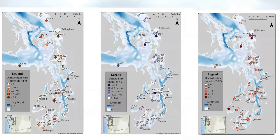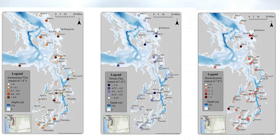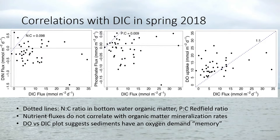There is strong variability in denitrification, and our estimate of denitrification is greater than the nitrate flux. Denitrification is the conversion of nitrate to nitrogen gas. There's also another process called anammox, which combines ammonium and nitrite to produce nitrogen gas. The fact that denitrification rates are greater on average than the supply of nitrate from the water column suggests that much of the denitrification occurring in the sediments is coupled nitrification-denitrification. What we don't know is what controls this variation from site to site.